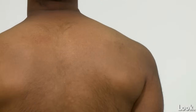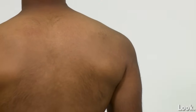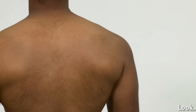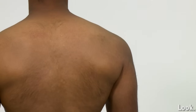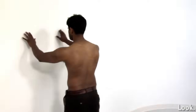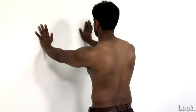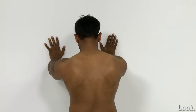Look at the scapulae and for any obvious wasting of surrounding muscle. Wasting of the supraspinatus and infraspinatus muscles appear as hollow grooves above and below the spine of the scapula, respectively. Asking the patient to push on the wall may reveal winging of the scapulae, which may result from damage to the long thoracic nerve supplying serratus anterior.